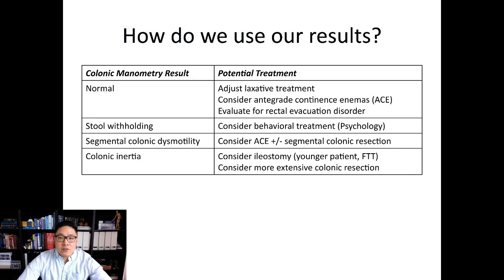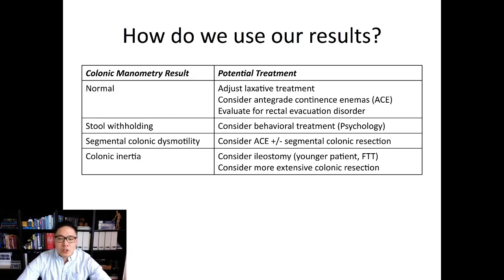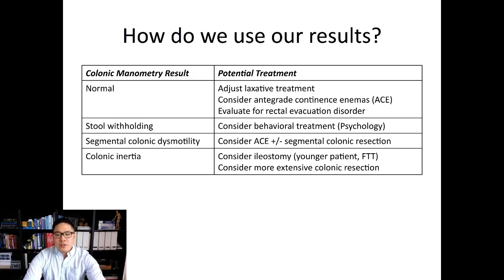If there's evidence of stool withholding, behavioral treatment may be the answer. If there's segmental colonic dysmotility, it's worth trying anterograde continence enemas first, but if that doesn't work, we can consider segmental colonic resection. For colonic inertia — when there's no motility — especially for younger patients who are failing to thrive, we think about creating an ileostomy, giving the colon some time, restudying in the future, and using that to decide whether a takedown would be appropriate. For older patients, sometimes we'll need to consider more extensive colonic resection.